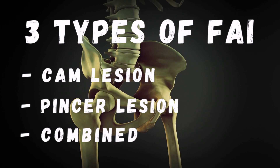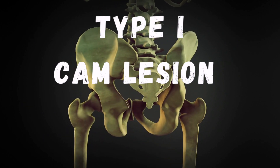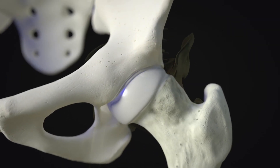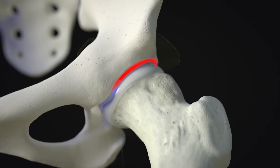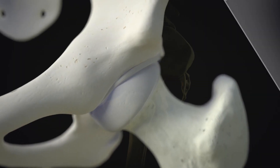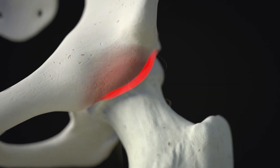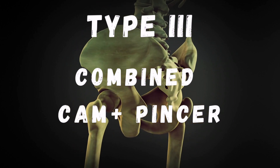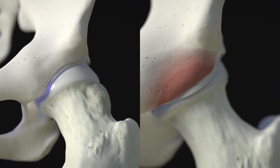There are three types of FAI: cam lesion, pincer lesion, and the combined version. The cam lesion is when the neck of the femur is thicker than it's supposed to be, and the lesion can pinch the labrum and damage the cartilage. The second type, pincer lesion, is when there is an extra bone at the edge of the hip bone socket, which can also pinch the labrum and damage the cartilage. The last type, combined, is when an individual has both cam and pincer lesion at the same time.